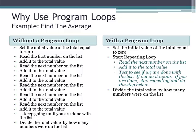Without a program loop, conceptually your program might look something like this. You set the initial value of the total equal to zero. Then you would read the first number on the list, add it to the total value, read the next number on the list, and add it to the total value. And you would keep going until you were done with the list. Then you would divide that total value by how many numbers were on the list. So if you had a list that was 100 numbers long, you would need about 202 lines of code to take the average of that without a program loop.